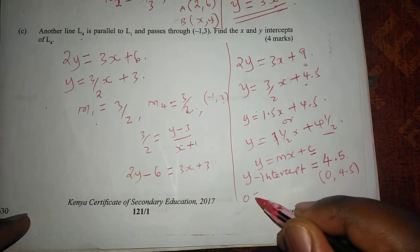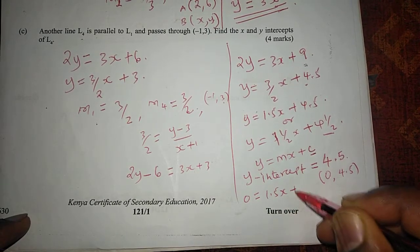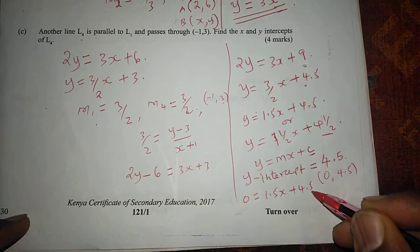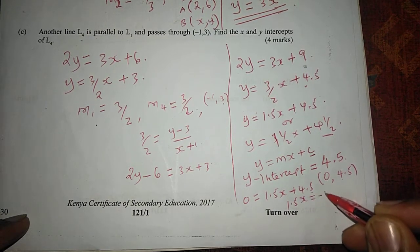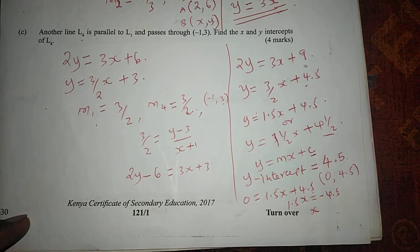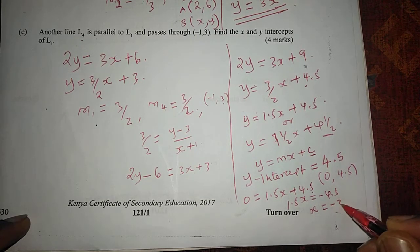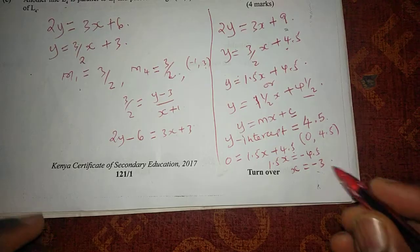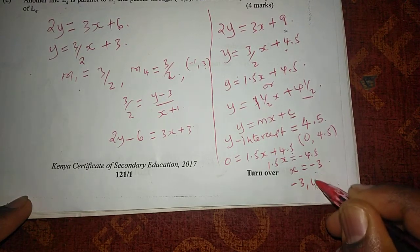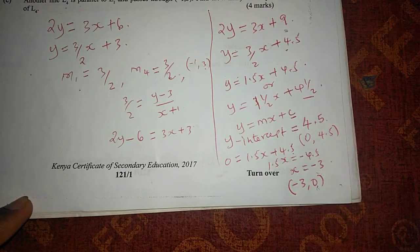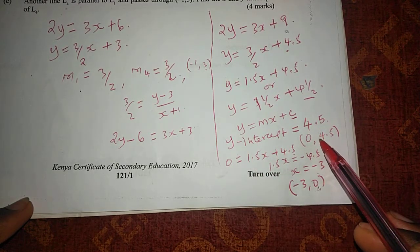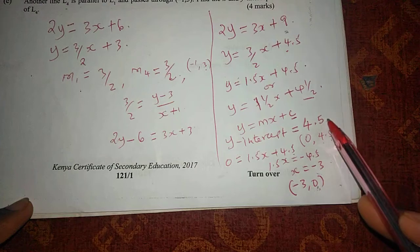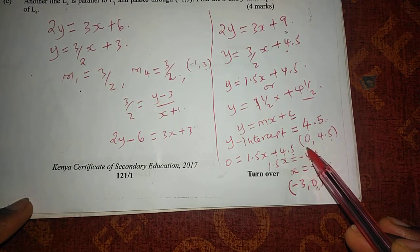Setting Y equals 0, we have 0 equals 1.5X plus 4.5. Bringing 4.5 to the other side gives 1.5X equals negative 4.5. Dividing both sides by 1.5 gives X equals negative 3. If expressed as a coordinate, the X-intercept is (negative 3, 0), since at the X-intercept the value of Y is always 0. And the Y-intercept can be expressed as the coordinate (0, 4.5), since at the Y-intercept the value of X is always 0. So that is how we solve the equation.